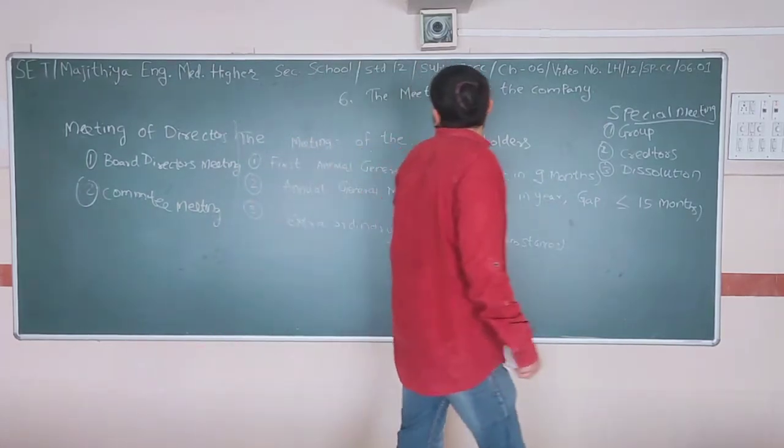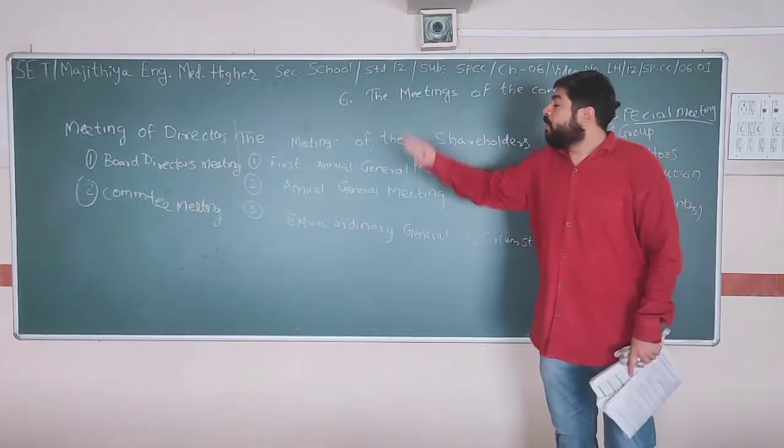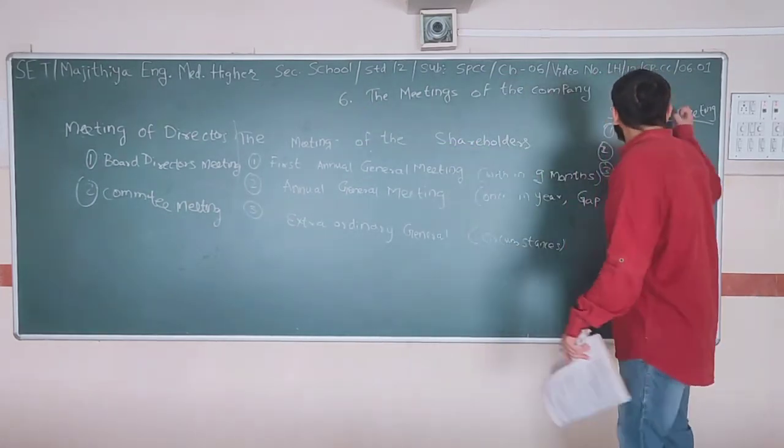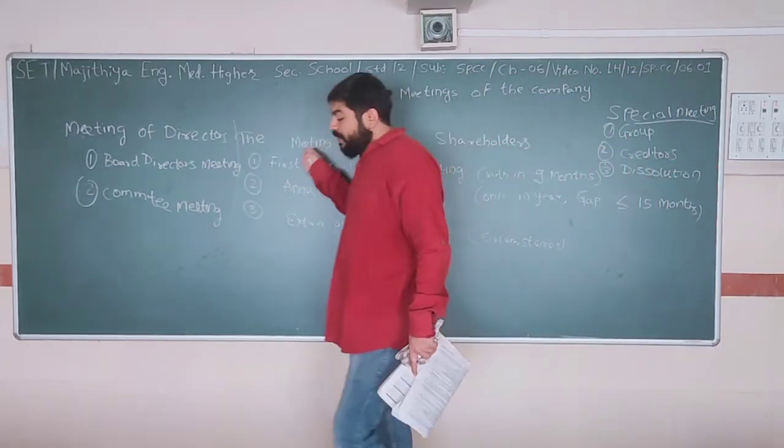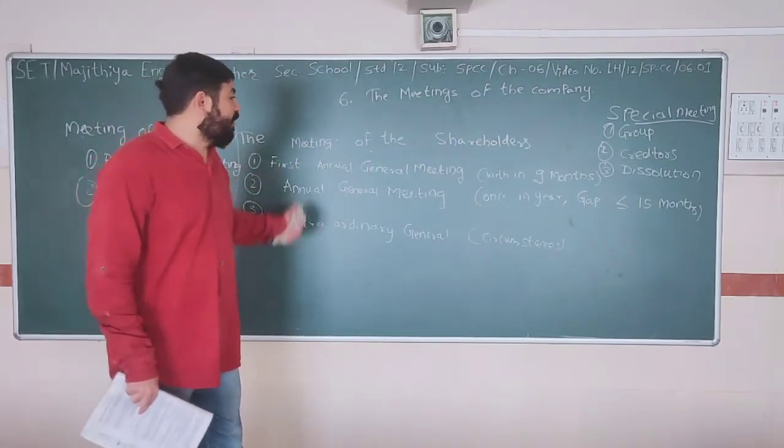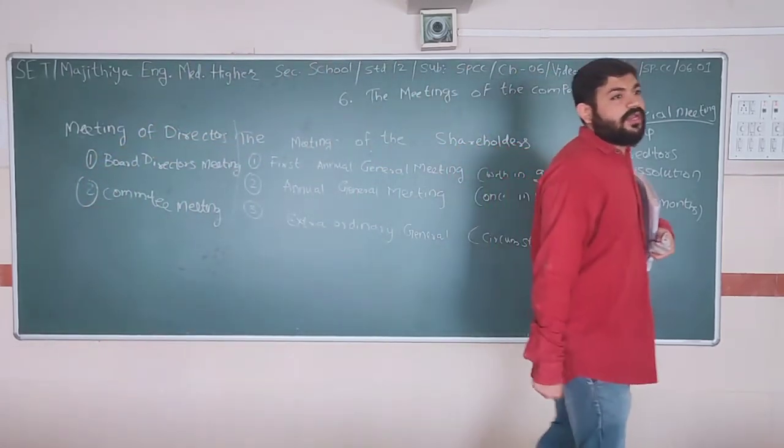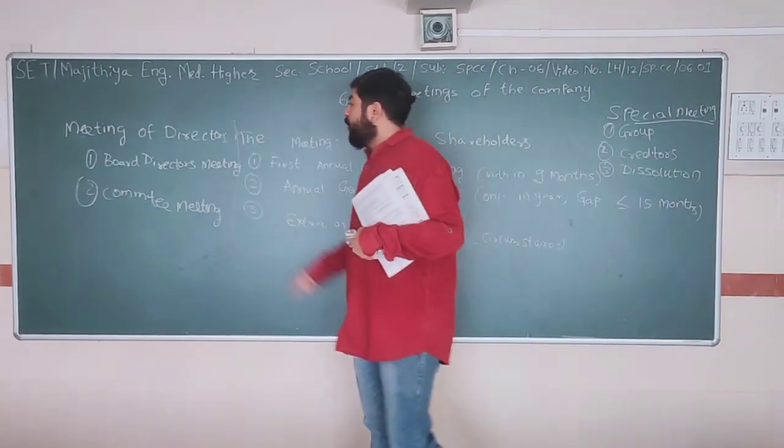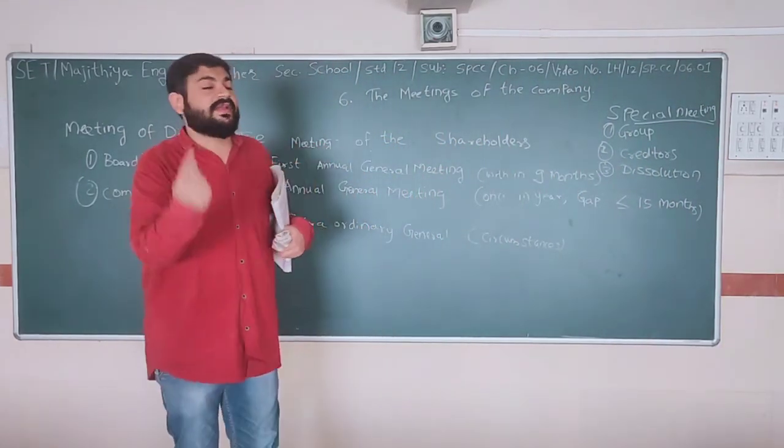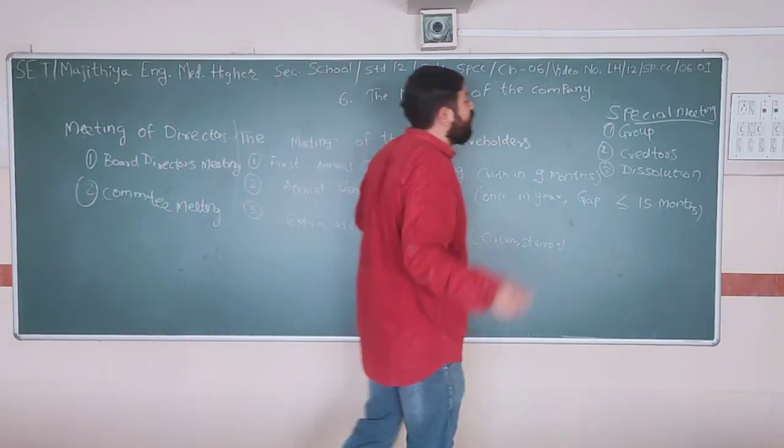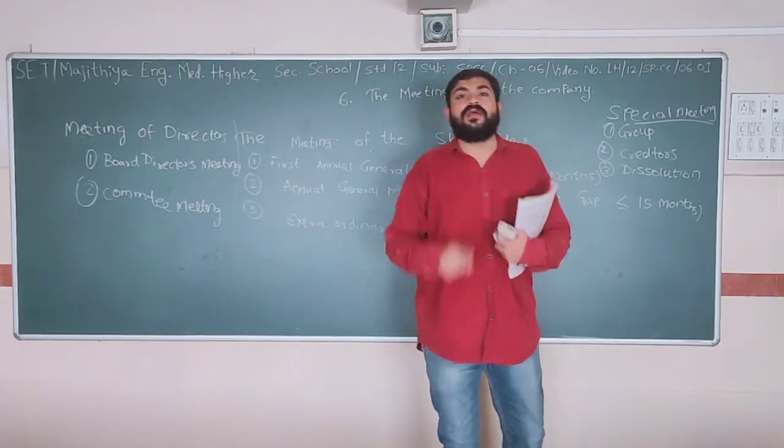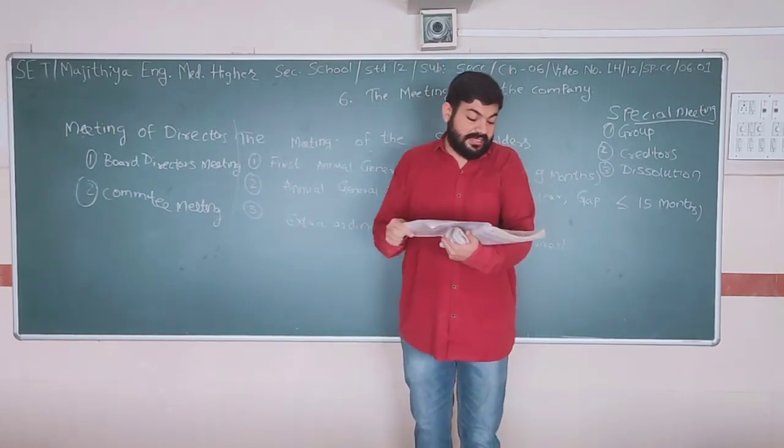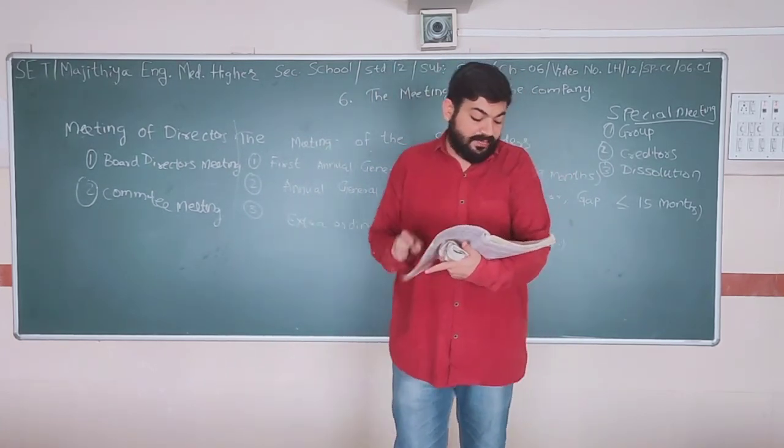So basically, today we have covered the three types of meetings: meeting of the shareholders, meeting of the directors, and special meetings. In meeting of the shareholders, generally three meetings - first annual general meeting, annual general meeting, and extraordinary general meeting. In meeting of the directors: board meeting and committee meeting. In special meetings: group meetings, creditors meetings, and dissolution meetings. In the next part of the chapter, we are going to discuss the agenda, notices, quorum, chairman, and committee meeting.